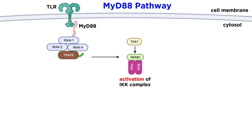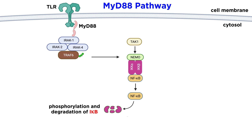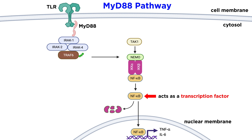TAC1 then phosphorylates and activates the IKK complex. Activated IKK phosphorylates I kappa B, which leads to the degradation of I kappa B. Normally, I kappa B is bound to a protein called NF kappa B in the cytosol. However, when I kappa B gets degraded, NF kappa B translocates to the nucleus, where it acts as a transcription factor for inflammatory cytokines such as TNF-alpha and IL-6.